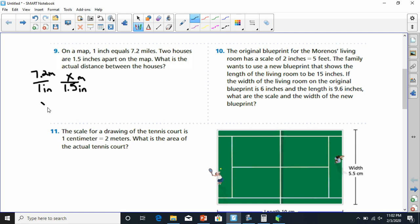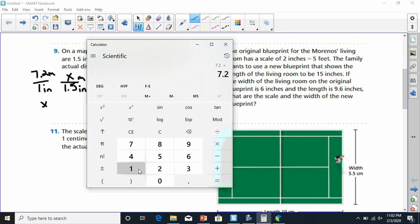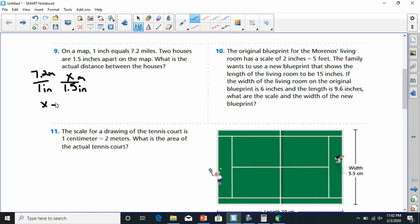Well, 1 times x is x. And 7.2 times 1.5, let's check that out in our calculator. 7.2 times 1.5 gives us 10.8. So, that means this has got to be equal to 10.8. And since we're talking about miles, it's miles.